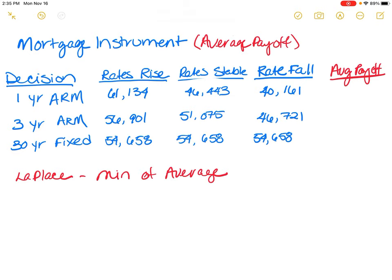We're just going to take the average for each one of these payoffs, and then we're going to select the best of the averages. So in this case, it's the minimum of the averages.